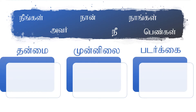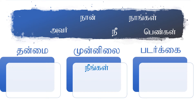Let's see if you can put these words into three categories: Tenme, Munnile, and Patatakai. Neengal means 'you' — the person in front of the speaker — so it goes into Munnile. Naan means 'I' — that's the speaker — so it goes under Tenme.